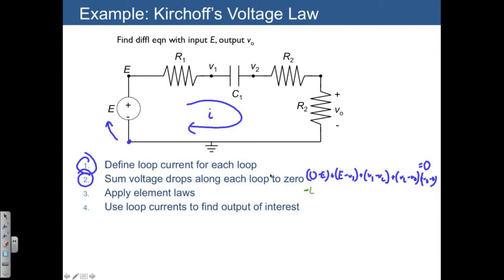But what's interesting is when we start to apply the element laws. We want to apply the element law for the drop across the resistor. That's just going to be R1 times I. For the capacitor, it's 1 over C1S times I. For the resistors, we have R2 times I and another R2 times I, all equal to zero.